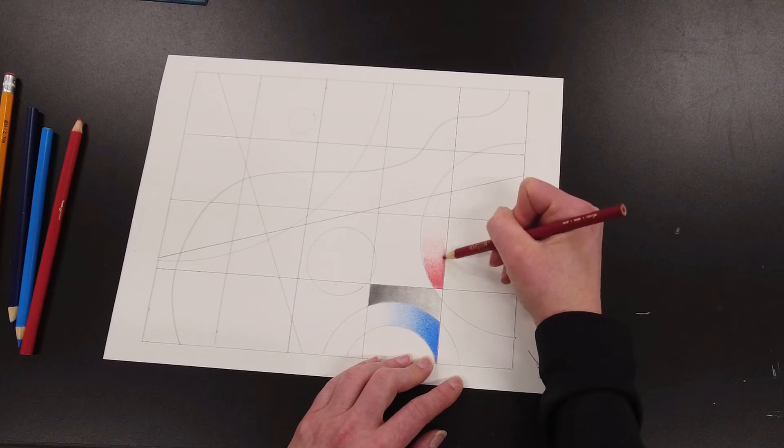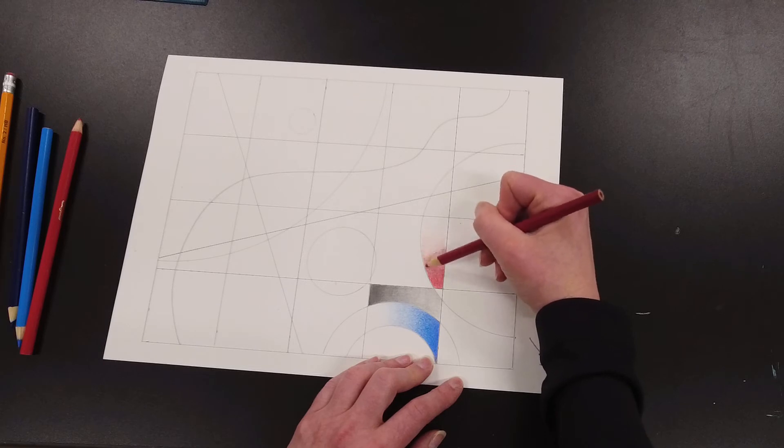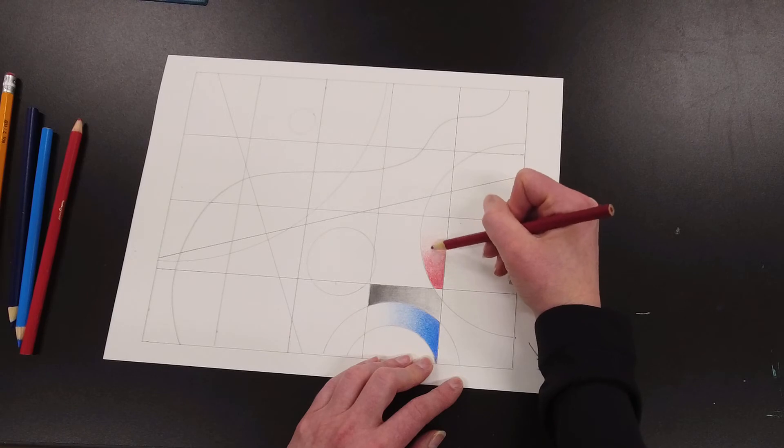As you can see the value is smoothing out, it's getting a little bit darker but it's still a transition. Since I'm filling in all those spaces and going straight up to the edges, it is remaining a nice smooth value transition there.